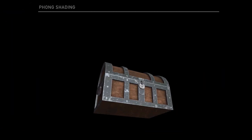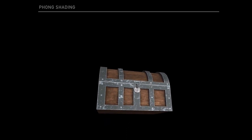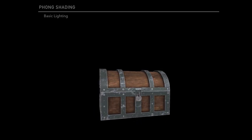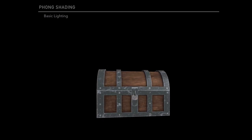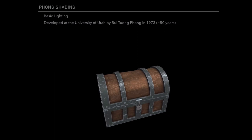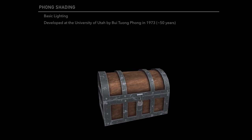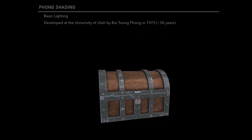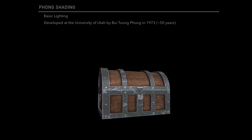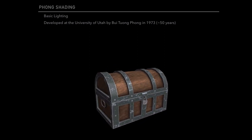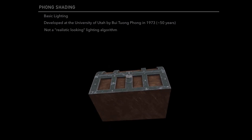Before your very eyes right now is a gorgeous chest. It's not real — it's generated in 3D with my engine, and the lighting technique I'm using on it right now is Phong shading. Phong shading is a basic lighting algorithm that allows you to make objects in your 3D realm look like a light is being shined off of them. It was developed at the University of Utah by Bui Tuong Phong in 1973, which is 50 years ago.